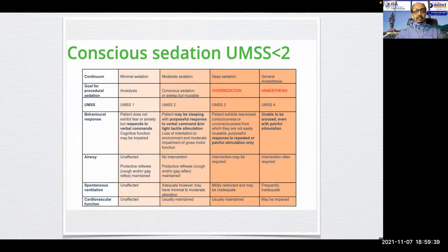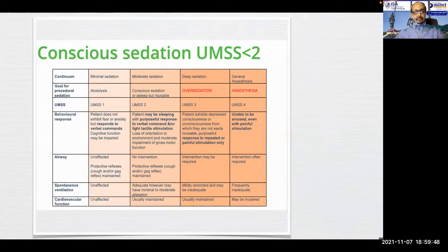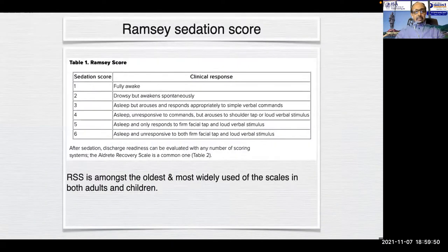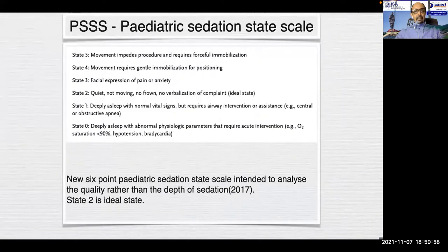The scale details behavioral response, airway, spontaneous ventilation, and cardiovascular function during minimal sedation, moderate sedation, deep sedation, and general anesthesia. The Ramsey Sedation Score is among the oldest and most widely used scales in both adults and children. Recently, a new 6-point pediatric sedation state scale intended to analyze the quality rather than the depth of sedation was described in 2017, in which state 2 is considered to be the ideal state.